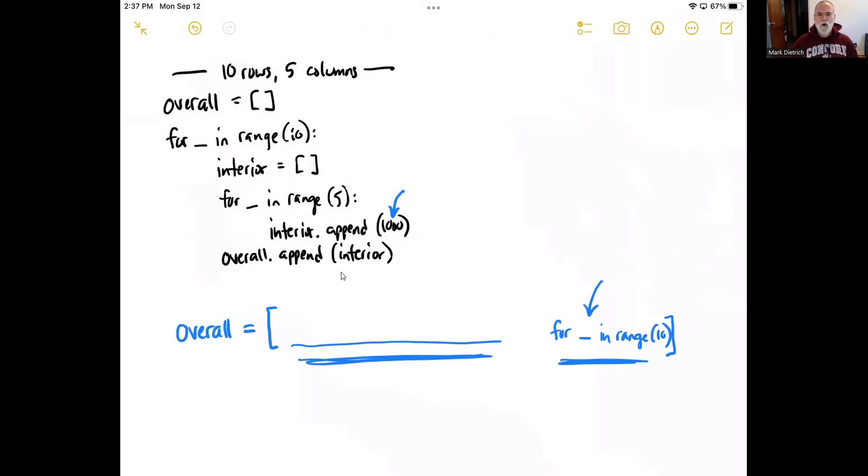So the question then becomes, what are we repeating 10 times? And that's what we're doing here in this outer or the inner loop. So it's almost like this outer loop for loop syntax is going to go right there for blank in range 10.